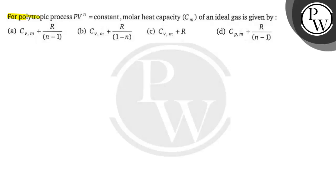Hello, let us read this question. For polytropic process PV^n = constant, molar heat capacity Cm of an ideal gas is given by... the polytropic process PV^n = constant. We have to find the molar heat capacity.